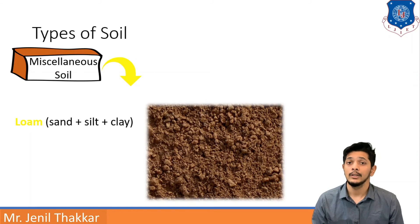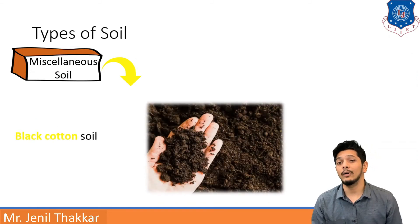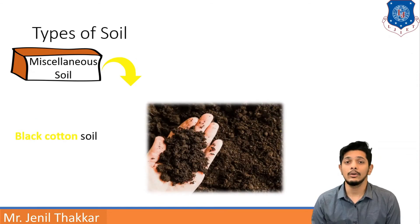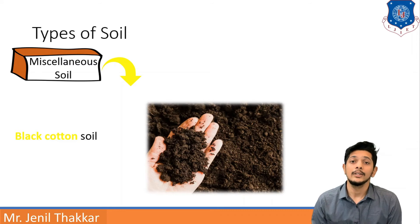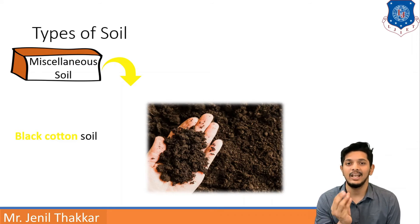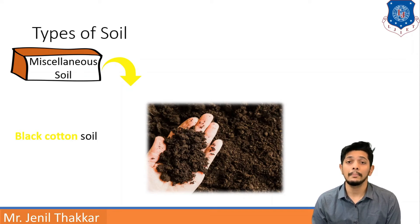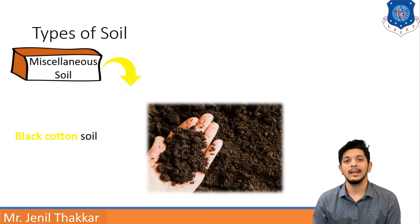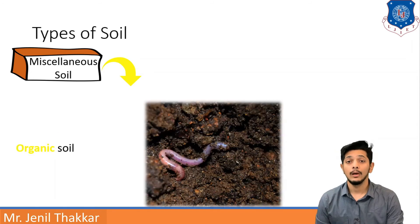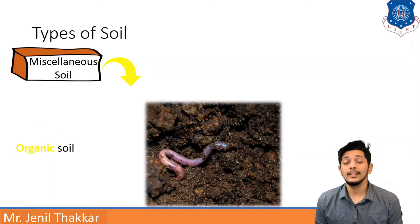Moving forward to the next type — black cotton soil. You can see the black texture in the picture. This soil is very useful for the crop of cotton, which is why it is known as black cotton soil. Moving forward, organic soil can be defined as a composition of dead plants, animal extracts, and organic matter.